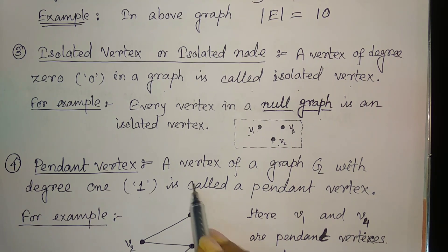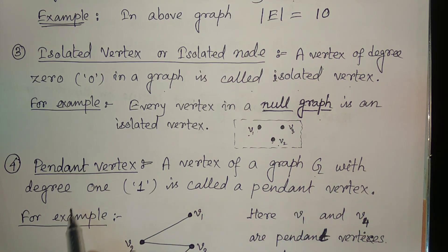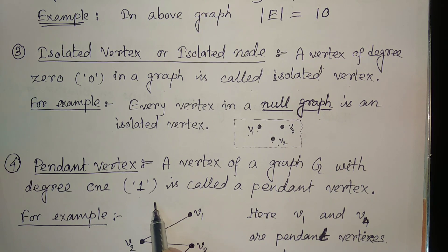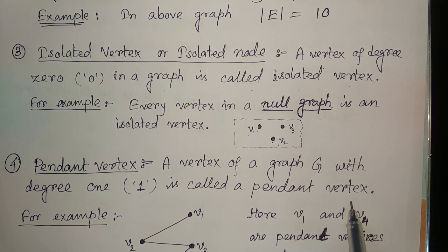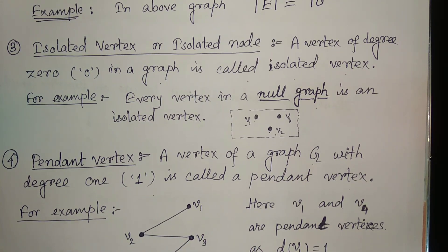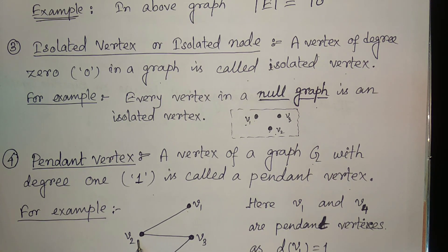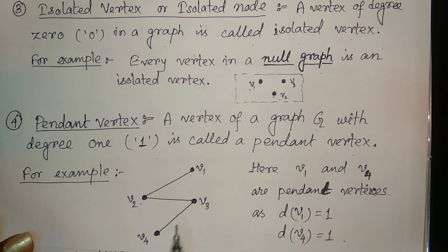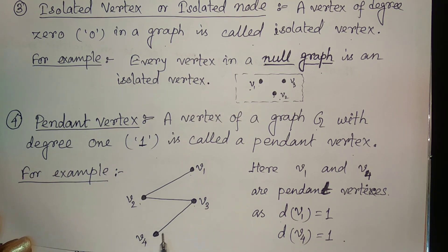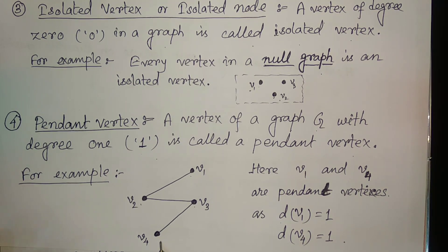Next is the pendant vertex. A vertex of a graph g with degree one is called the pendant vertex. If this is the graph, then the degree of v1 is one, degree of v2 is two, degree of v3 is two, and degree of v4 is again one.